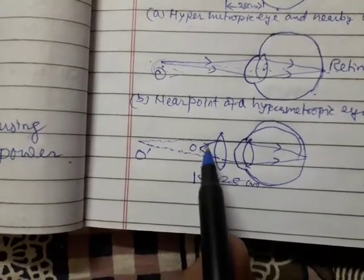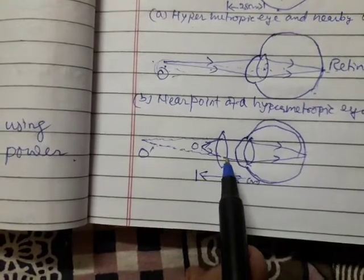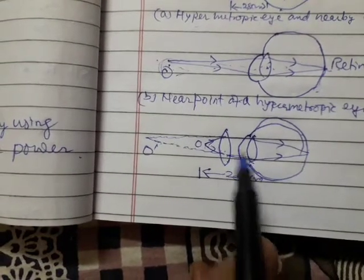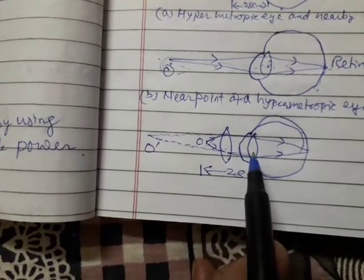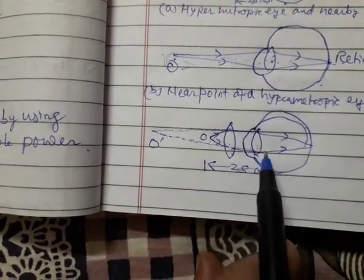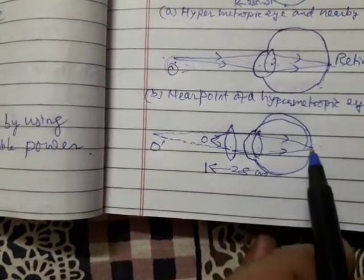Now, the rays coming from the object are first converged by the convex lens, and after convergence, they pass through the eye lens which further converges these rays and forms the image at the retina.